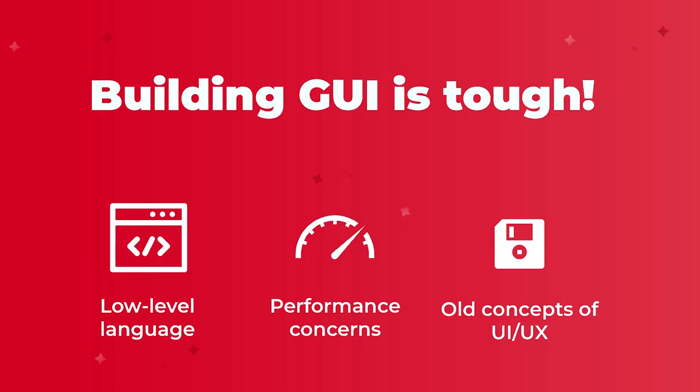We know it's really hard to build GUI applications. It's a tough job, especially if you're using a low-level programming language like C or C++. There are also a lot of performance concerns when building an app, and generally the results are really poor in terms of UI and UX — far from the great experience that people are already used to, especially with mobile applications. The question is: how can you provide the same UX that people are used to for embedded software and embedded solutions?